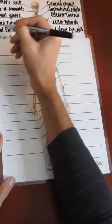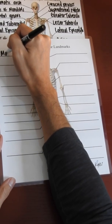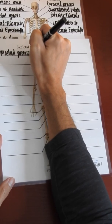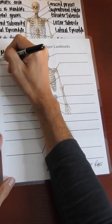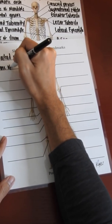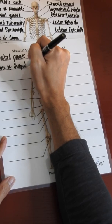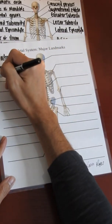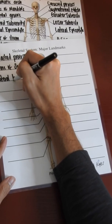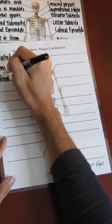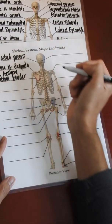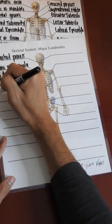So the very first one that we have is the mastoid process. We have the spine of the scapula, we have the lateral border of the scapula, also known as the axillary border of the scapula.